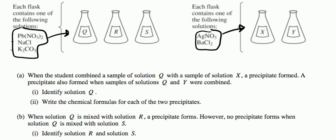So, when the students combined a sample of solution Q with a sample of solution X, a precipitate formed. A precipitate also formed when samples of Q and Y were combined. Identify solution Q. So, this solution is going to form a precipitate when it is connected with X and with Y. We know that nitrates are always soluble. Always soluble. So, because of that, we pay attention to nitrates.